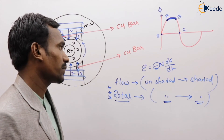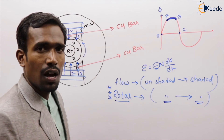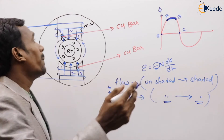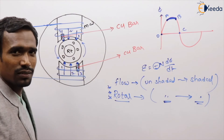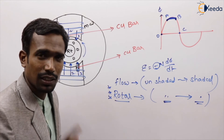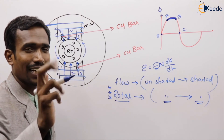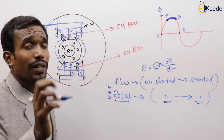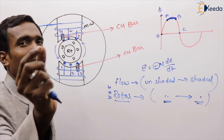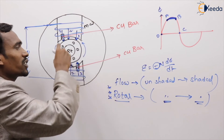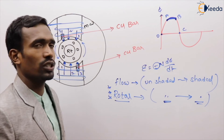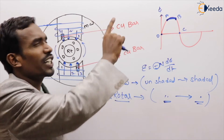Now they will ask you a question: how can we reverse the rotor rotation? By changing the copper bar's position, we can change the rotor direction. Second question: to get bidirectional rotation, how many shaded rings are required? To get bidirectional rotation, we require four copper rings. This is about the shaded pole induction motor.